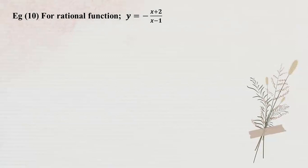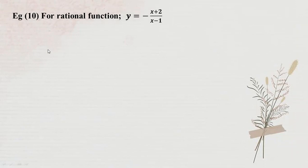y equals minus x plus 2 by x minus 1. Differentially, it is continuous. So we have a rational function. We have a domain. y equals minus x plus 2 by x minus 1. Now, x is not equal to 1.